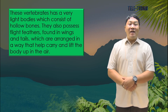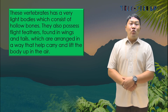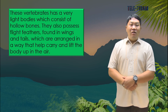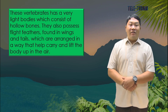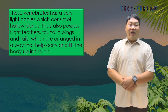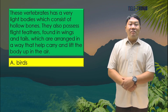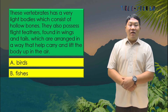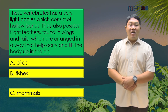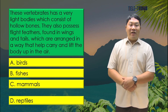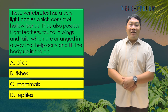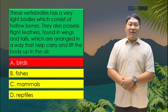These vertebrates have very light bodies which consist of hollow bones. They also possess light feathers found in wings and tails, which are arranged in a way that helps carry and lift the body up in the air. Is it letter A, birds? Letter B, fishes? Letter C, mammals? Or letter D, reptiles? The answer is letter A, birds.